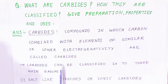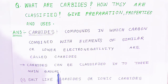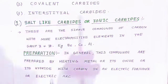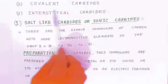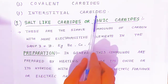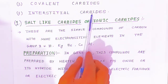Carbides can be classified into three main groups. First, salt-like carbides, also called ionic carbides. Second, covalent carbides. And third, interstitial carbides.